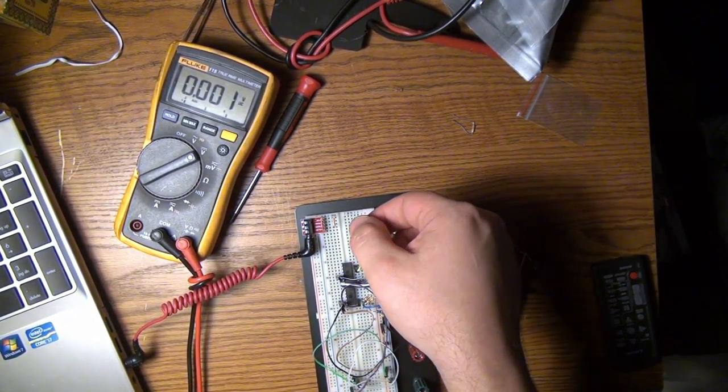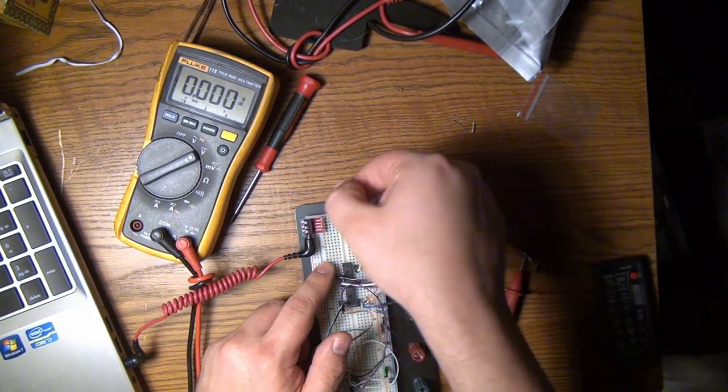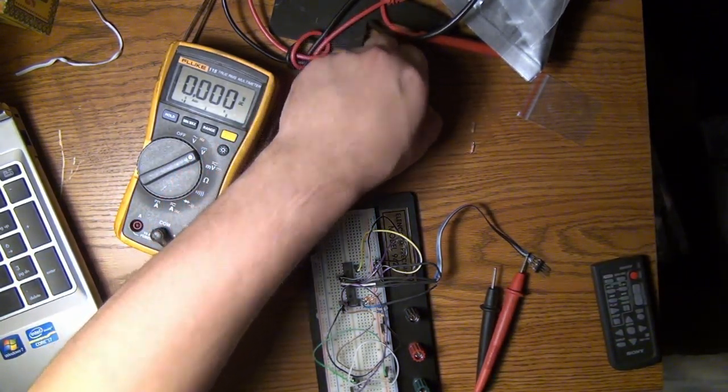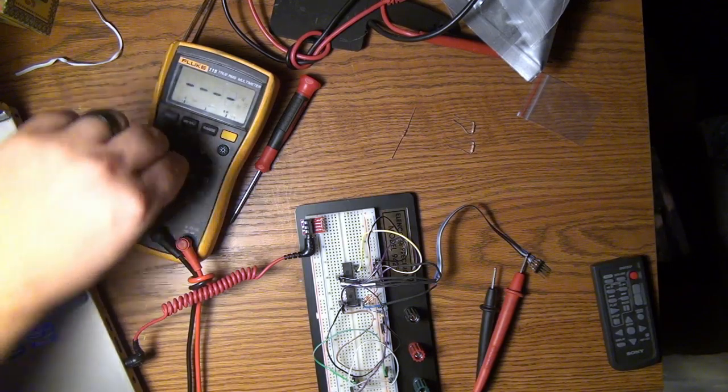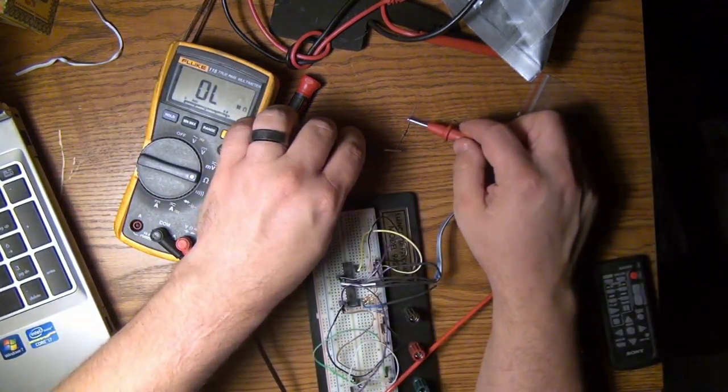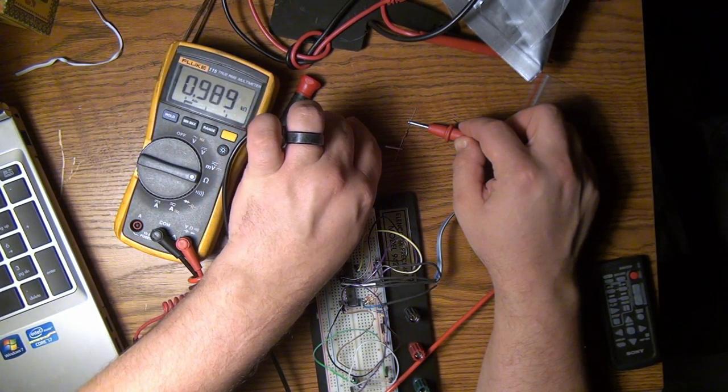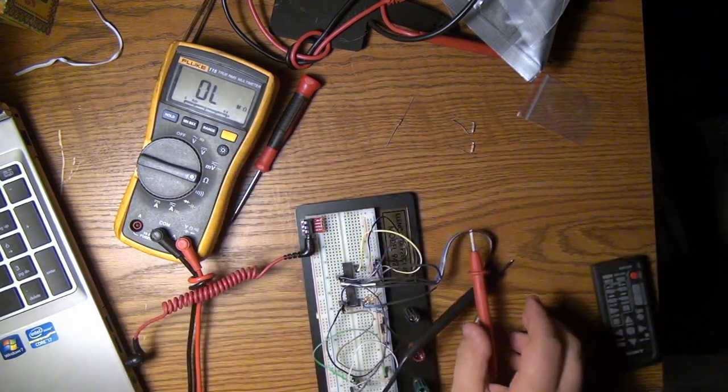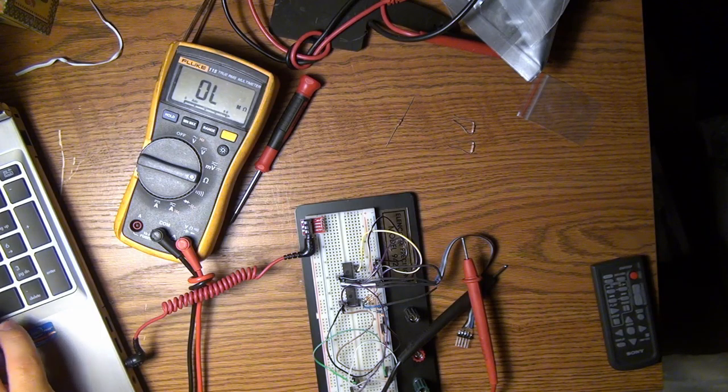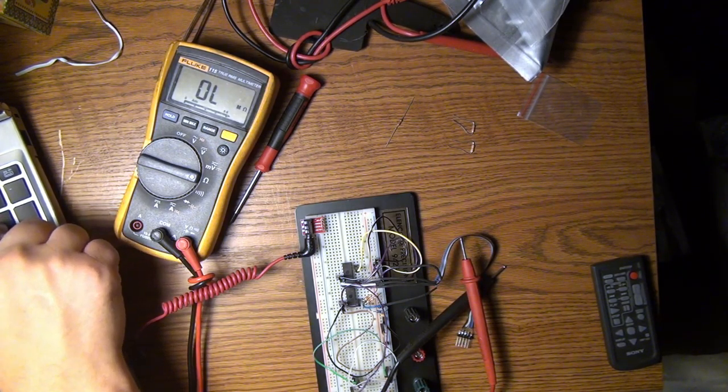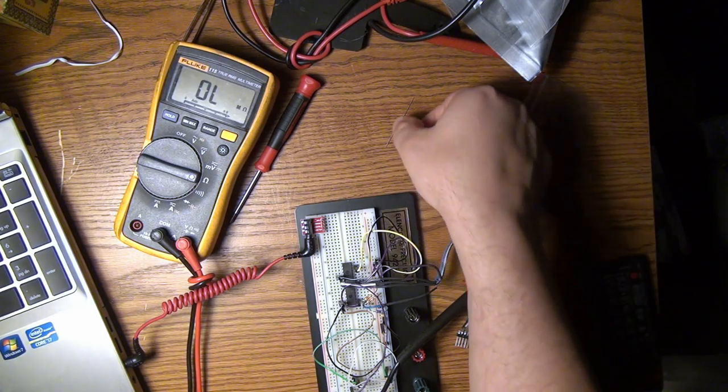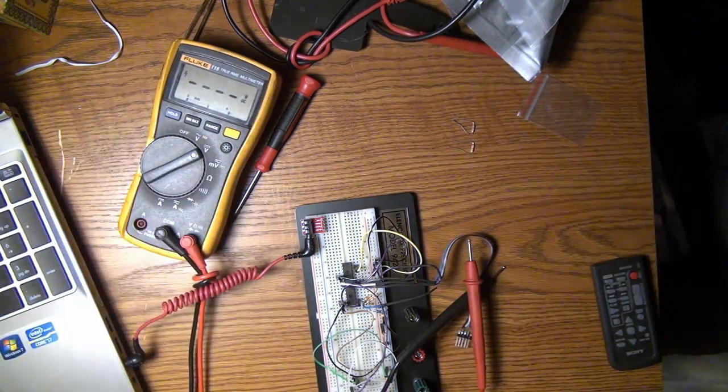Again, lather, rinse, repeat. We're going to yank this guy and I'm just going to assume it's the same for both. We saw that it's close enough. Switch this back to ohms like that. And this is 0.989k.